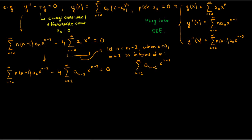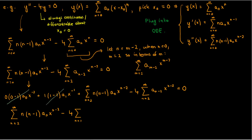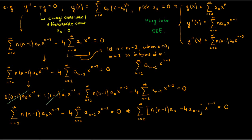That problem is easy to overcome. Just expand out the n equals 0 and n equals 1 terms in the first summation — these first two terms are just 0 — and we're left with the sum from n equals 2 to infinity of a_n times n(n−1) times x^(n−2) minus 4 times the sum from n equals 2 to infinity of a_(n−2) times x^(n−2) equals 0. Everything is consistent now, so we can combine these two summations to get the sum from n equals 2 to infinity of [a_n·n(n−1) − 4a_(n−2)] times x^(n−2) equals 0.